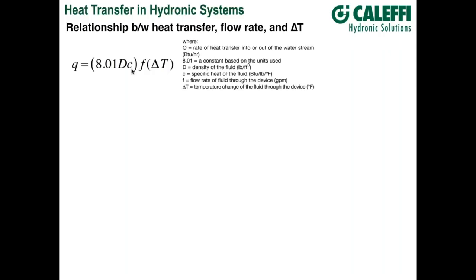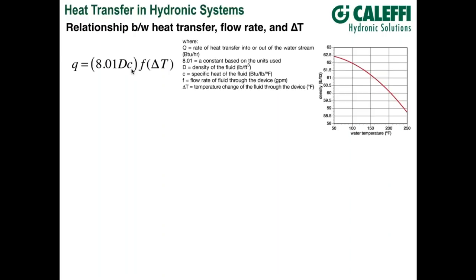The graph shows the variation in density for water over a temperature range of 50 to 250°F — it's significant enough that for precise calculations like BTU metering, you need to factor in this change in density. The simpler formula most people use in hydronics is: rate = 500 × flow (GPM) × delta T. The number 500 is what you get assuming 60°F water — taking the density of water at 60°F (roughly 62.4) and a specific heat of 1.0, you get approximately 499.6, rounded to 500.